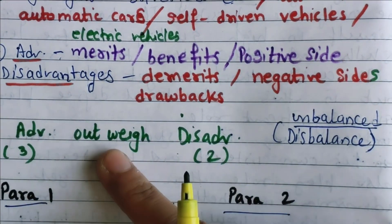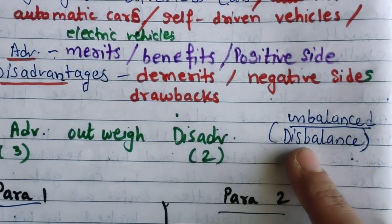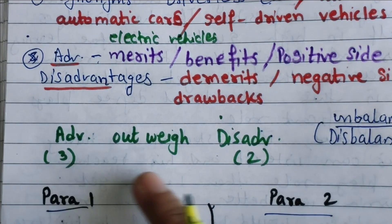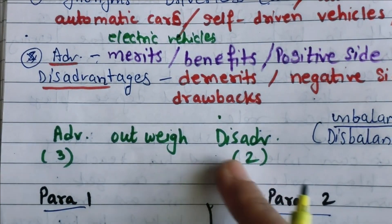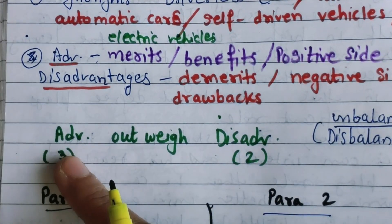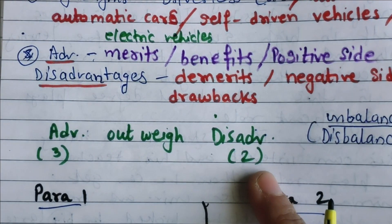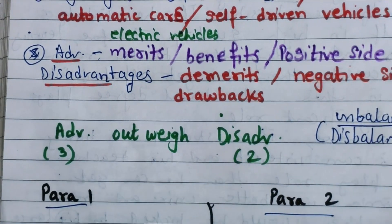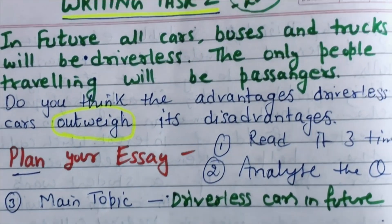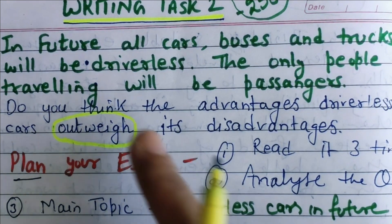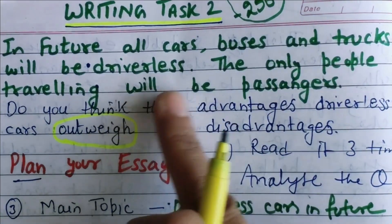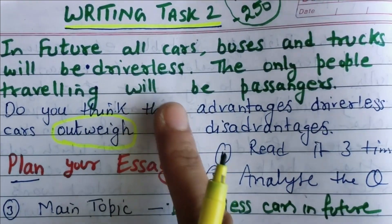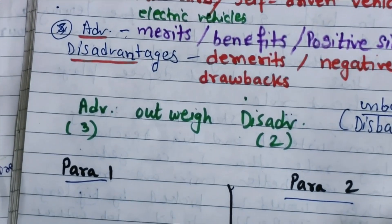Now let's understand outweigh. Here we need to show this balance between advantages and disadvantages. If you are writing three advantages, then two disadvantages — if you are writing two advantages, then one disadvantage will be sufficient to elaborate your points.